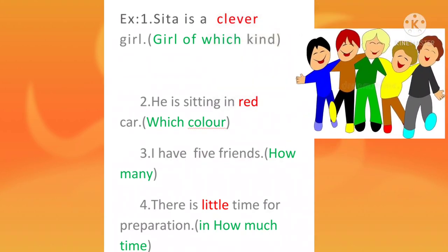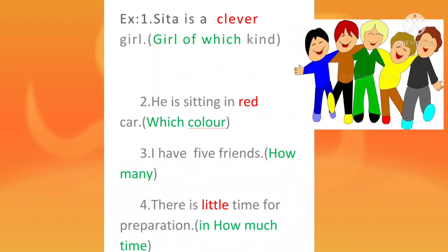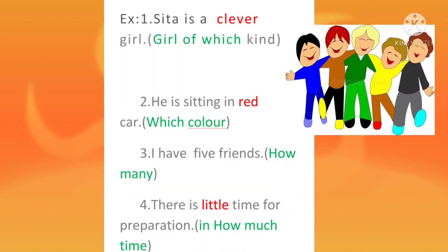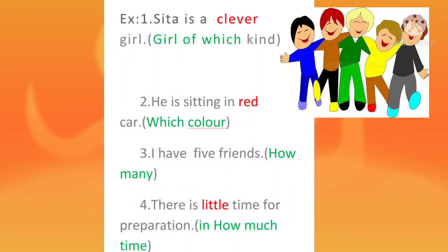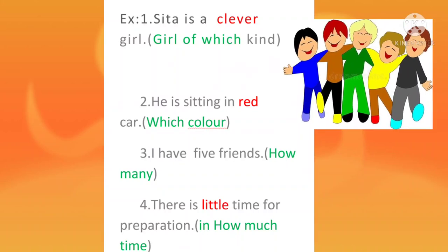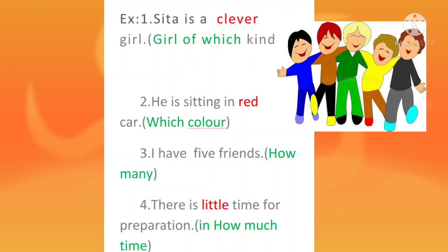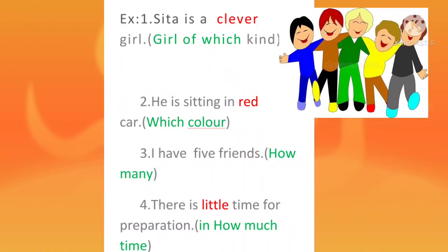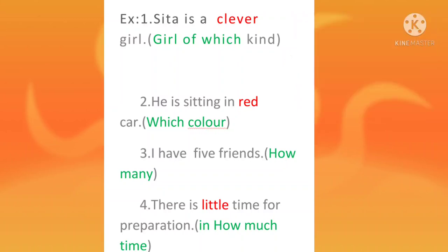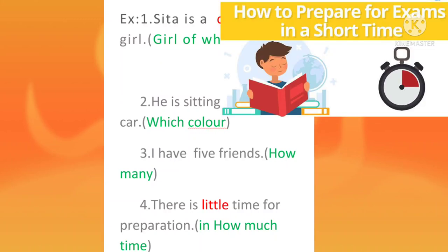See the next one: I have five friends. How many friends? I have five friends. Friends is the noun and the adjective is the number five — five describes about the noun friends. The fourth example: there is little time for preparation. How much time is for preparation? Little. Little is the adjective and time is the noun. Little describes about the noun time.